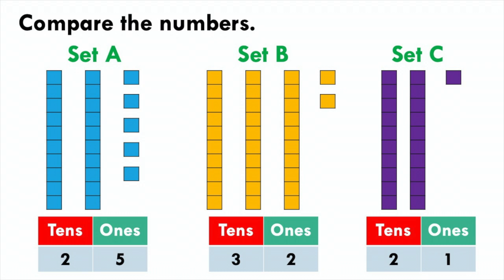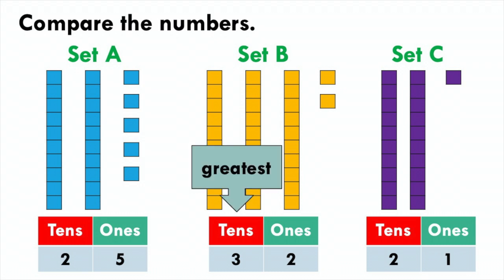Set A has 2 tens, set B has 3 tens, and set C has 2 tens. Which number is the greatest? 3 tens is the greatest, therefore 32 is the greatest number.